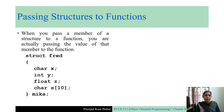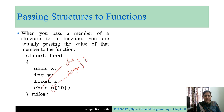Let's take an example. We have a structure `fred`, and the `fred` structure contains four variables: char x, int y, float z, and char string s[10]. The `s` member is a char array, also called a string, and its size is 10 — meaning 10 characters can be stored in this string.